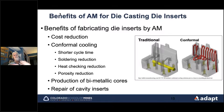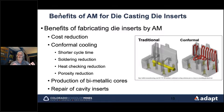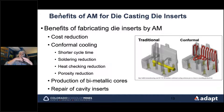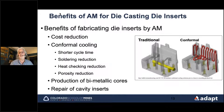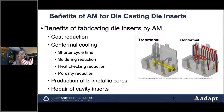Conformal cooling provides several commercial benefits. First, shorter cycle time: the faster we extract heat, the faster we can eject the casting and make the next one, generating more revenue per hour. Second, solder reduction: soldering occurs when the die gets above about 500°C, in areas difficult to cool with traditional cooling plans. With conformal cooling, we can reach those difficult areas, reduce die temperature, and increase productivity.